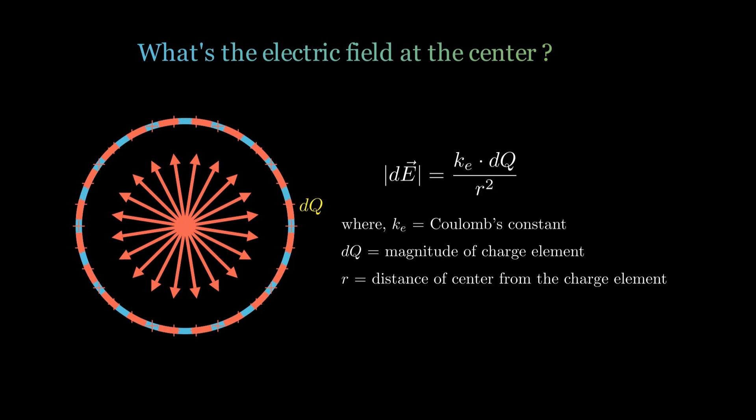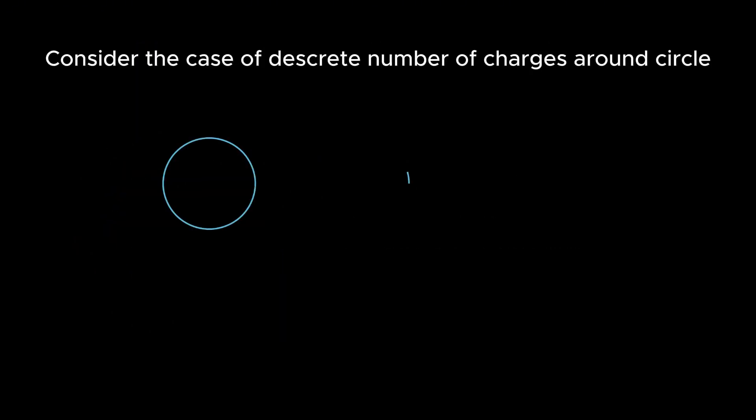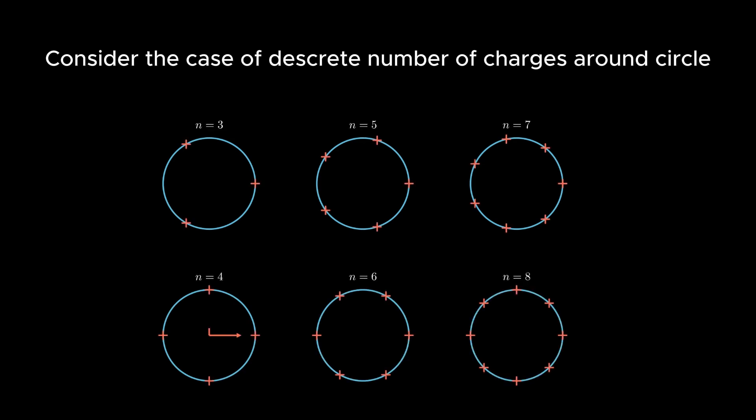Each charge element dq on the ring has an equal dq located directly opposite, cancelling each other out. This symmetry explanation works well for continuous charge distribution. But what if we are dealing with a discrete number of charges around the circle? With an even number of charges, it's easy to see that each electric field has an exact opposite to cancel it out. But what if there is an odd number of charges? There is no exact opposite field to cancel out each one. So does this balancing act still hold for any number of vectors?